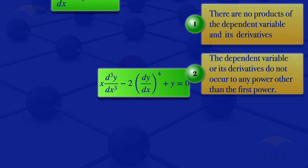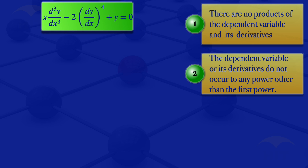The final equation is: x multiplied by the third derivative of y with respect to x, minus the derivative of y with respect to x raised to the power 4, plus y equals 0. The dependent variable is y. There are no products of the dependent variable and its derivatives, so condition 1 is satisfied. However, the first derivative of the dependent variable is raised to power 4, violating condition number 2, which states that the dependent variable or its derivatives must not occur to any power other than the first. Therefore this differential equation is nonlinear.